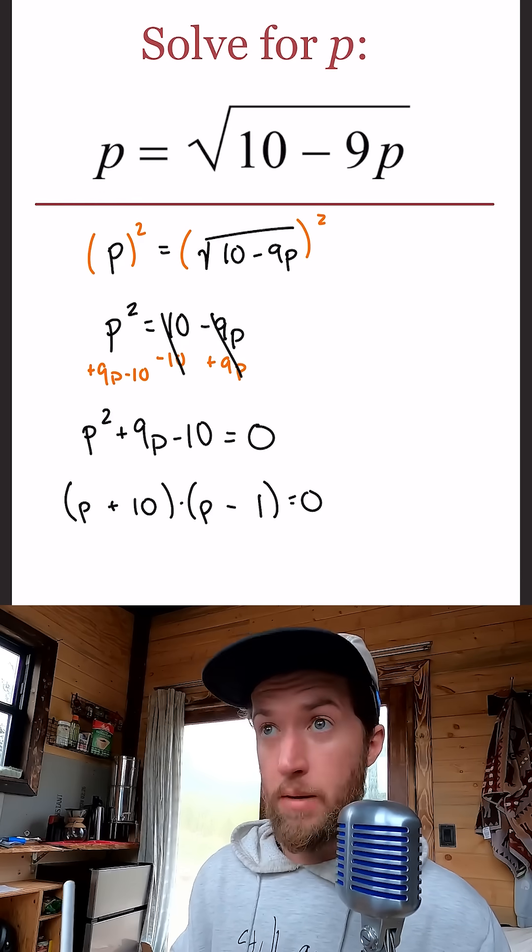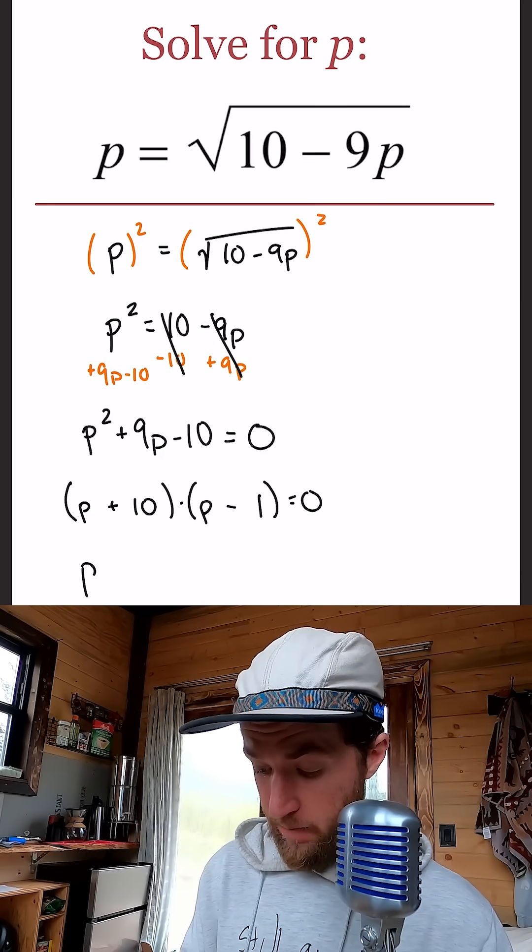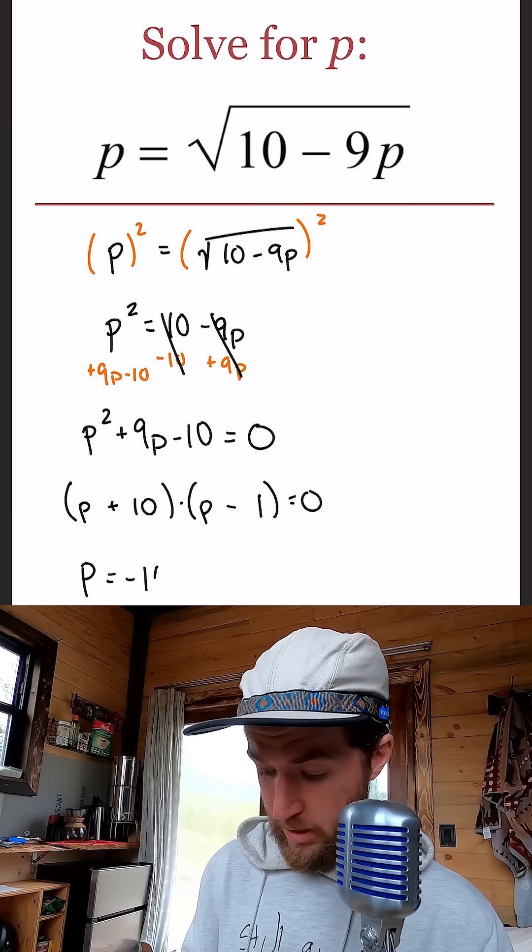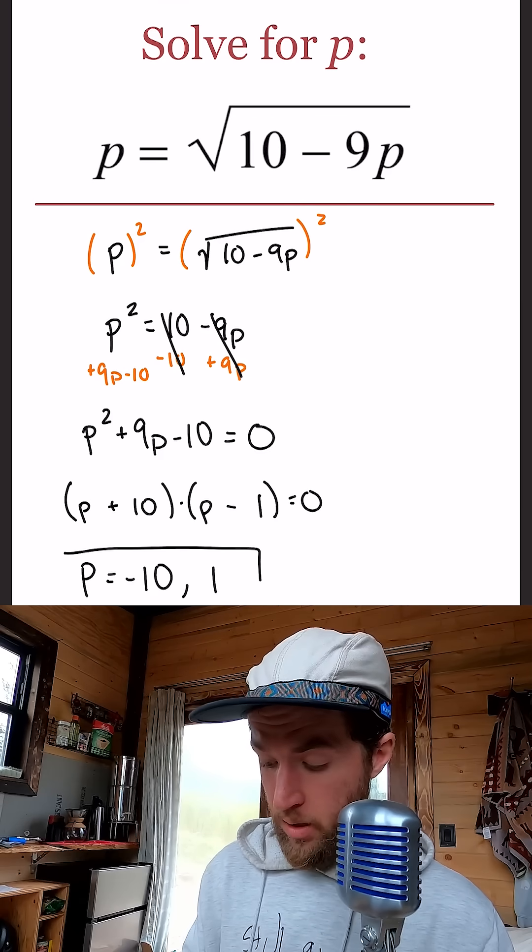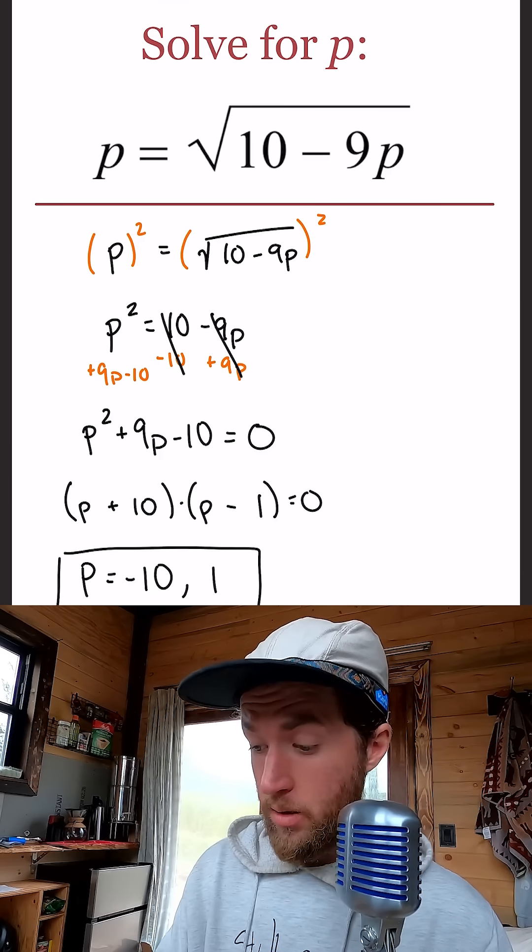So the two P values that will give us a 0 is a P of negative 10 because negative 10 plus 10 is 0, and a P of positive 1 because 1 minus 1 is 0. So those are our two potential answers. Let's go check them.